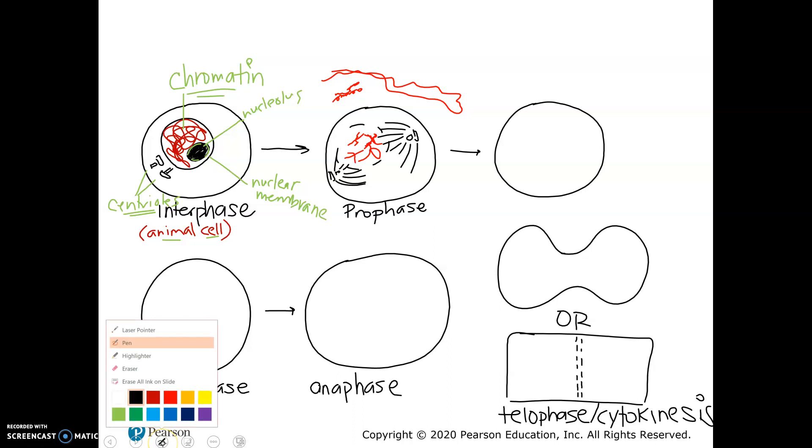So these lines are going to sort of start coming across the cell. So by the end of prophase, we now have our four chromosomes. Again, we're just using four as a sample. They haven't moved to the middle yet or anything like that. The nucleus is completely gone. And our centrioles are on opposite sides.